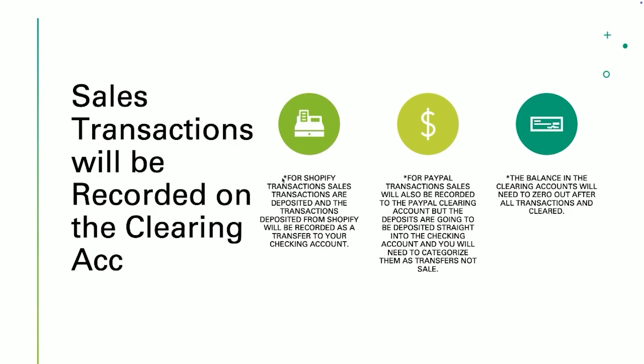For Shopify transactions, sales are deposited in the clearing account and the deposit from Shopify will be recorded as a transfer to your checking account. For PayPal transactions, sales are also recorded on the PayPal clearing account, but deposits go straight to the checking account and you will need to categorize them as a transfer — not as sales. For the regular Shopify credit card you will match in banking; for PayPal, you categorize as a transfer because PayPal transactions deposit straight from PayPal, not Shopify.